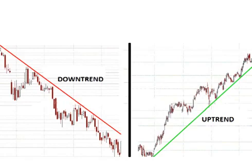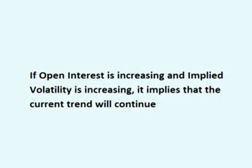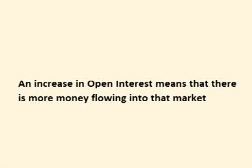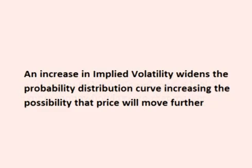Let's look at using option open interest if the price of the stock or ETF is in an uptrend or is in a downtrend. If open interest is increasing and implied volatility is increasing, it implies that the current trend will continue. An increase in open interest means that there is an increase in contracts for that particular stock or ETF, which means that there is more money flowing into the market. An increase in implied volatility means that the market is stating that there is an increased possibility that price will move further from its current location.